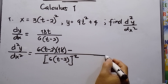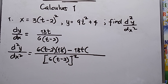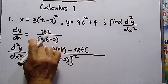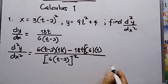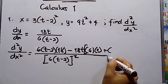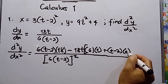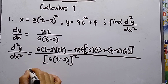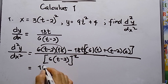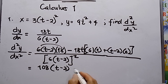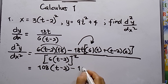Then minus: copy the numerator, 18t, and differentiate the denominator using product rule — 6 times 1 plus (t minus 2) times the derivative of 6, which is 0. So this gives 18 times 6 equals 108, times (t minus 2), minus 18t times 6, which also equals 108.